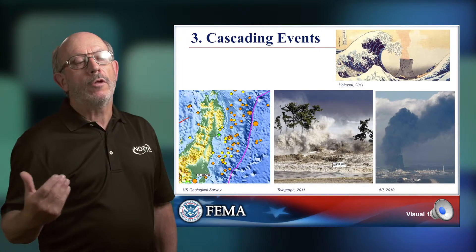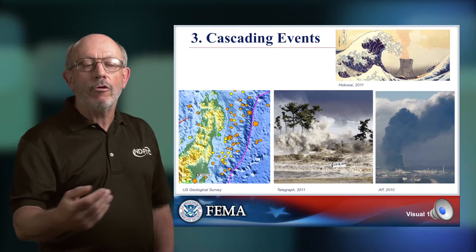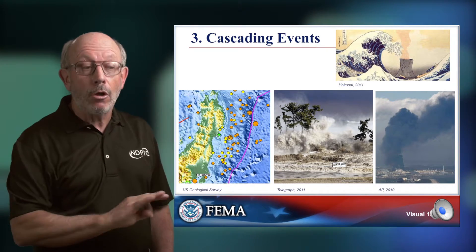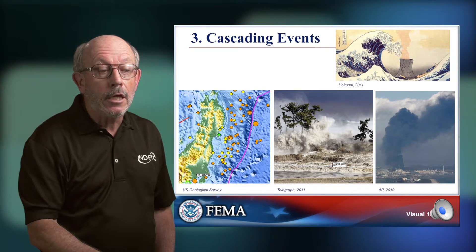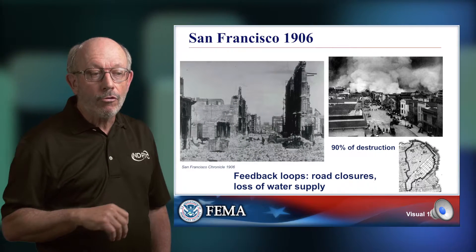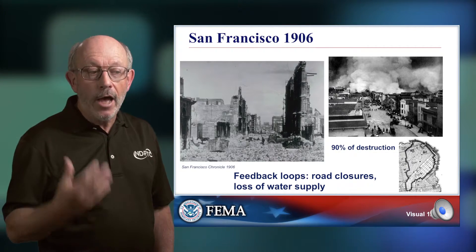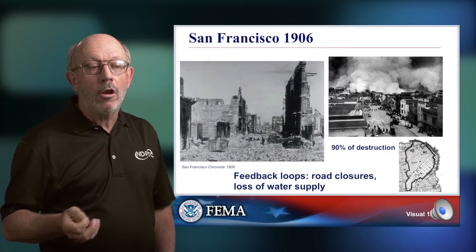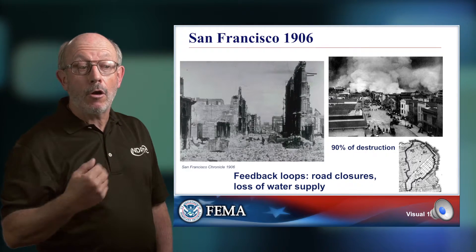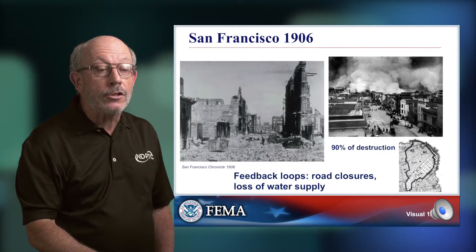Cascading events are the notion that one hazard event triggers another hazard event which is independent of the first in size, scope, and aerial extent — but started because of its predecessor. The classic example is the San Francisco 1906 earthquake, where 90% of the destruction was not the earthquake itself — it was the fires that were triggered, localized to a very narrow portion of the downtown area. The earthquake created problems because closed roads and loss of water supply meant firefighters couldn't get in.